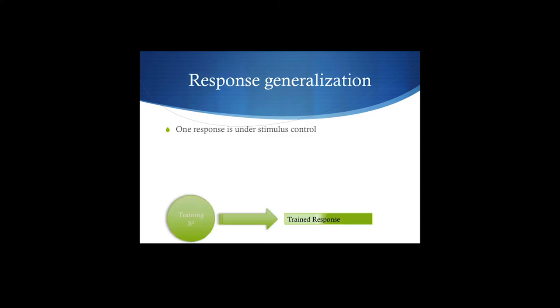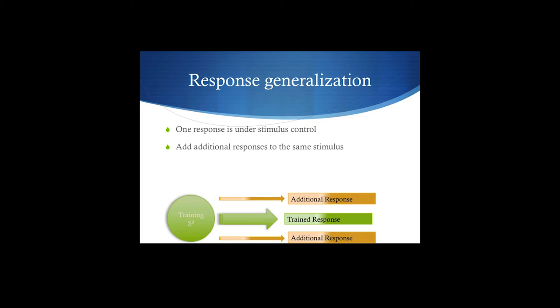The other type of thing we want to think about is response generalization. One response is always under stimulus control, so training a discriminative stimulus produces that particular response. What we may then want to do is train additional responses to that same discriminative stimulus. That's response generalization.